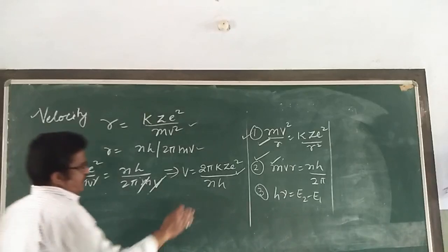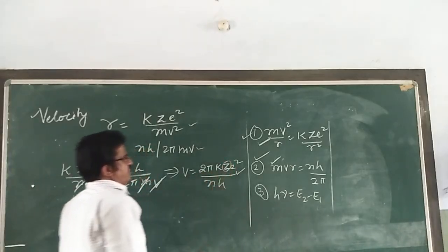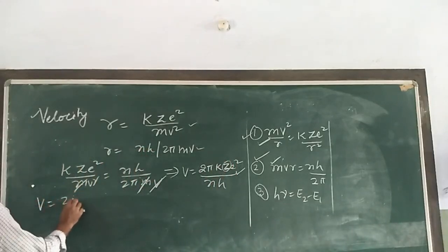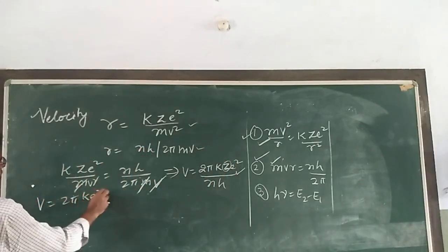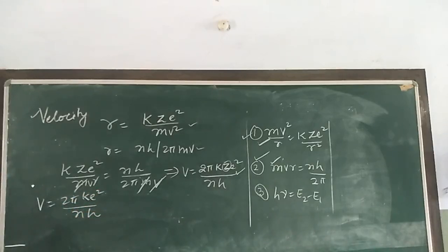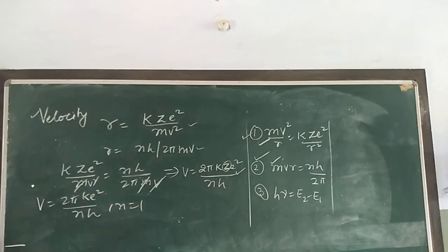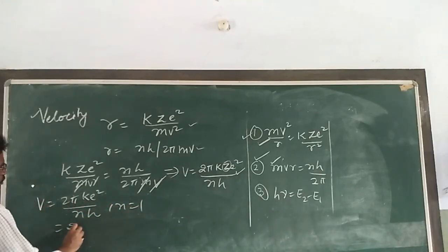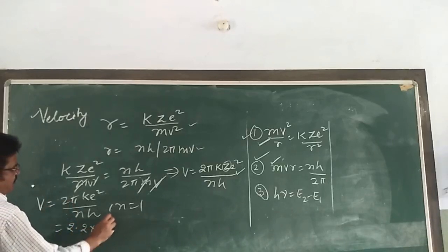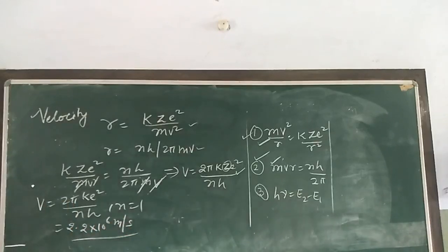For the hydrogen atom, putting z = 1, the formula becomes v = 2πke²/(nh). Calculating for n = 1, the orbital velocity of the electron is 2.2×10⁶ m/s.